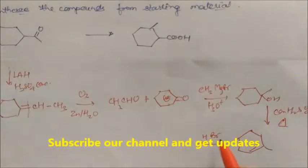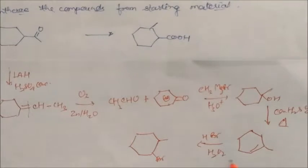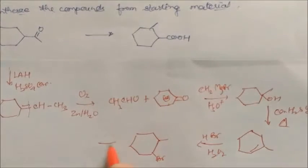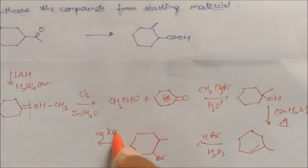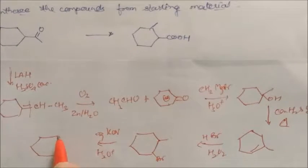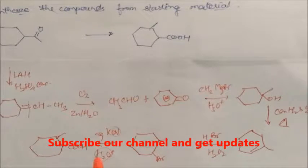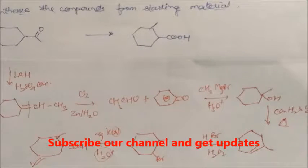Again if you give HBr in presence of peroxide, this will give you a product where HBr adds as per the peroxide (anti-Markovnikov). Then if you give aqueous KCN followed by hydrolysis, the Br will be attacked by CN, which on acid hydrolysis gives a carboxylic acid as the final product.